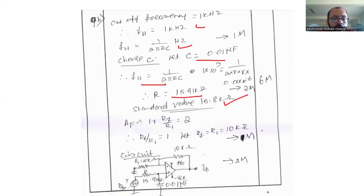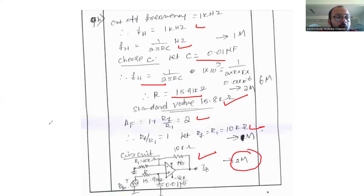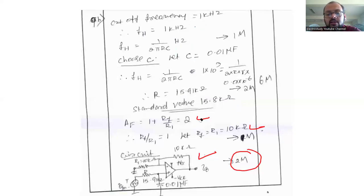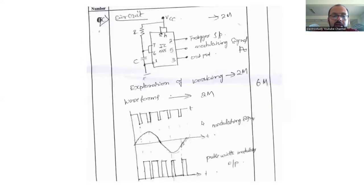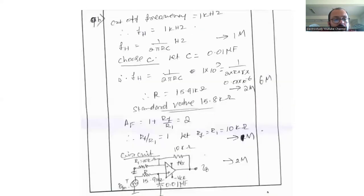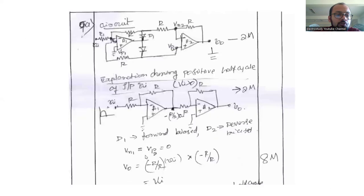Then use the gain formula 1 + RF/R1 = 2. From this, R1 and RF will both be 10 kΩ. Draw and mention the circuit diagram. Each step carries weightage — don't skip even a single step. Most people know the answer but skip steps; don't do that. Present as neatly as you can. Drawing the circuit diagram and mentioning the design values is 100% sufficient for this question.